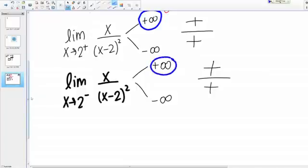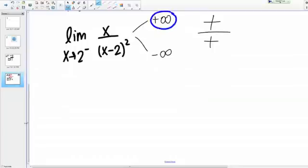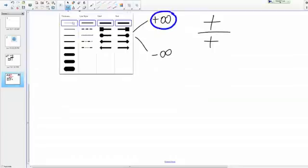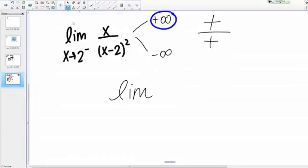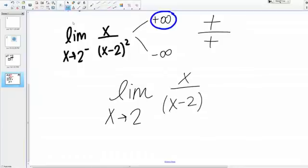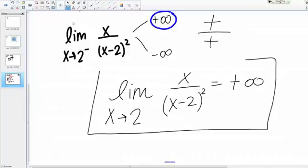So what do I see? I see that my left handed limit equals positive infinity, and my right handed limit equals positive infinity, so that tells me the answer for the limit overall. So the limit as X goes to 2 of this function equals positive infinity, because the one-sided limits match up.